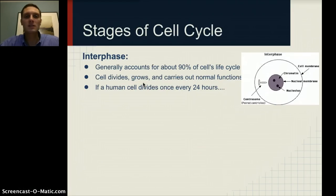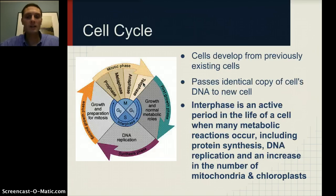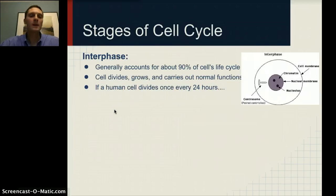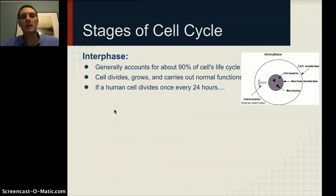If we look at the stages of the cell cycle, the first part is interphase. Interphase takes up all of these different parts — G1, S, and G2 — and accounts for about 90% of the cell's life cycle.